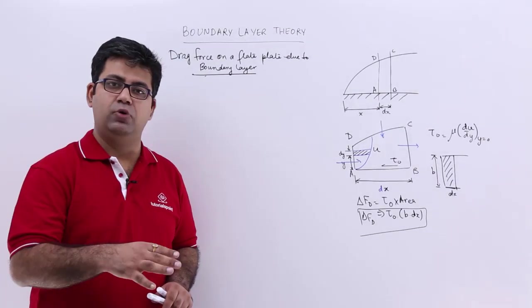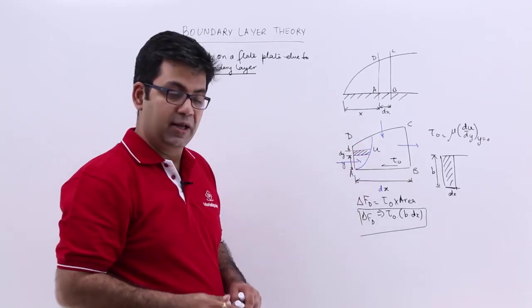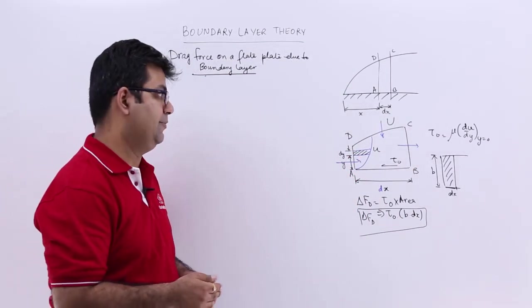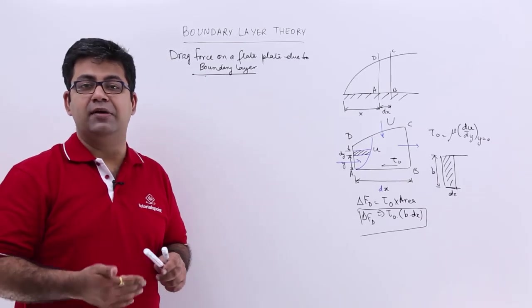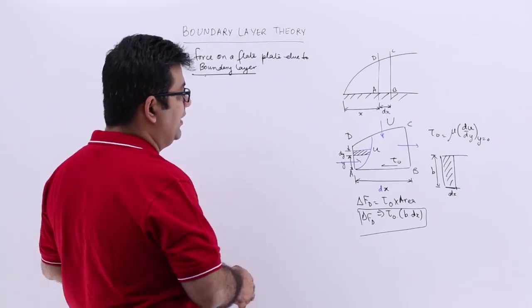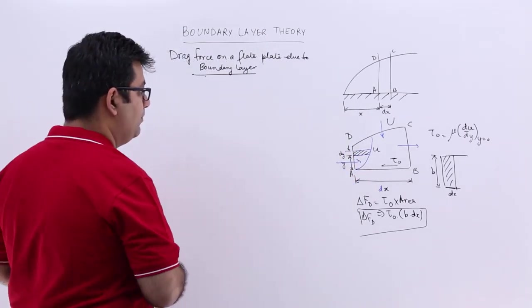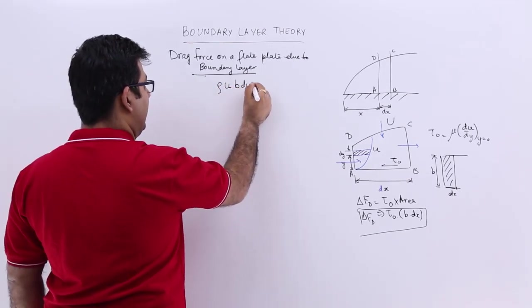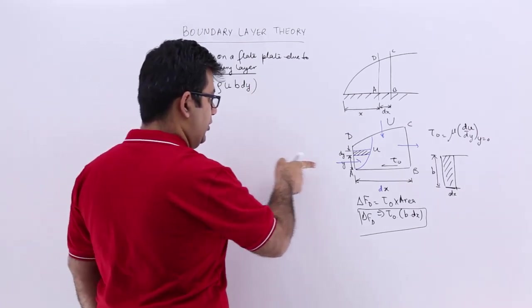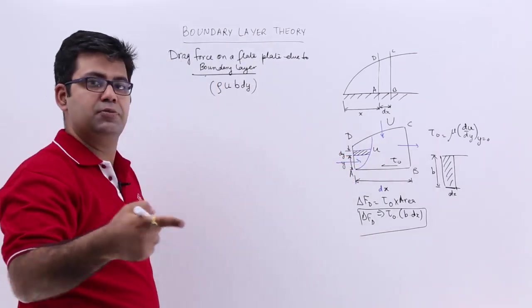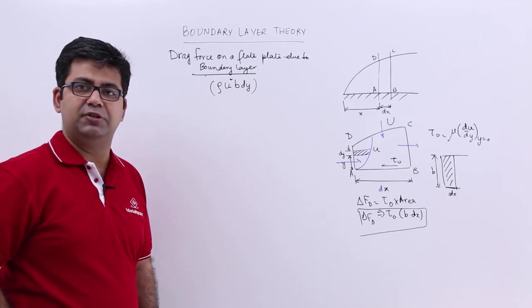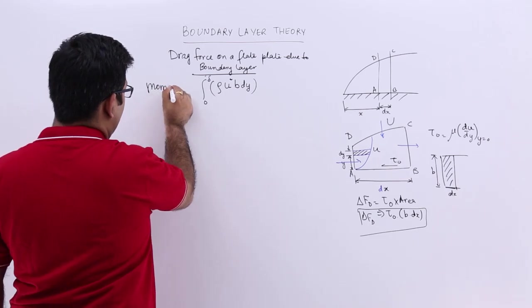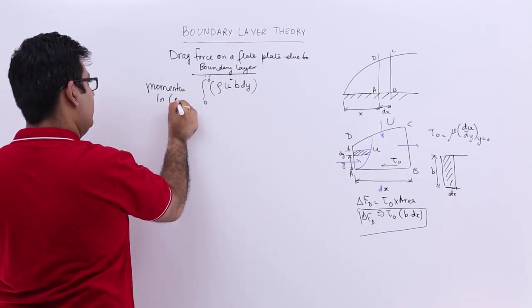The mass flow in from DC arrives at the free-stream velocity capital U. Now looking at the momentum flow in through face AD: the mass through a strip is ρ·u·b·dy, and the velocity through face AD is small u, so the momentum integrand involves u². Integrating from 0 to δ gives the momentum in through face AD.